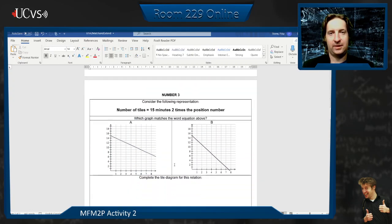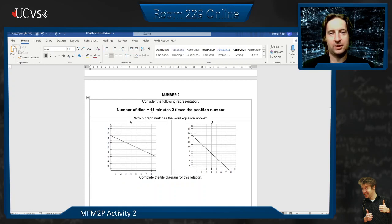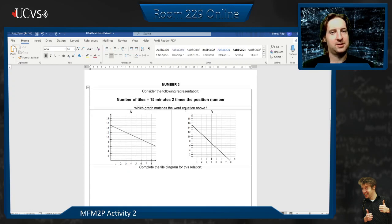Next one here, we have some words. Number of tiles equals 15 minus two times the position number. Hmm. What does that mean? I'll let you guys think about that. Okay?